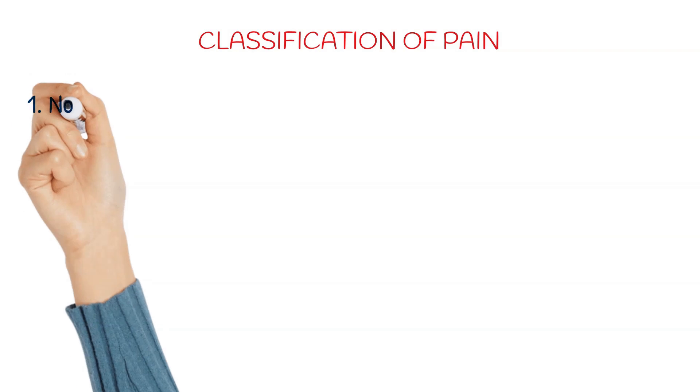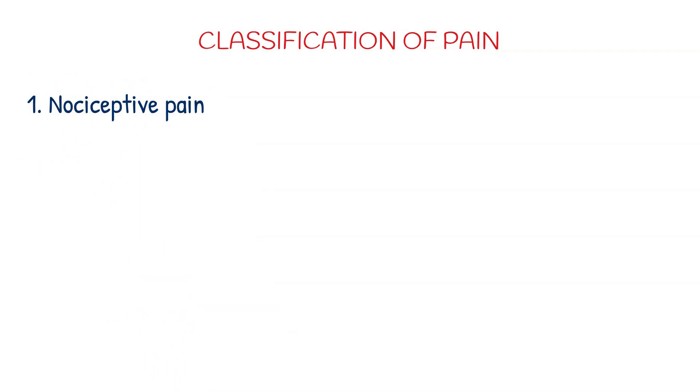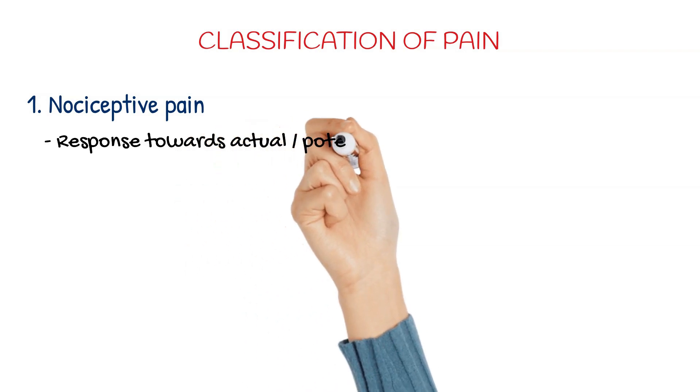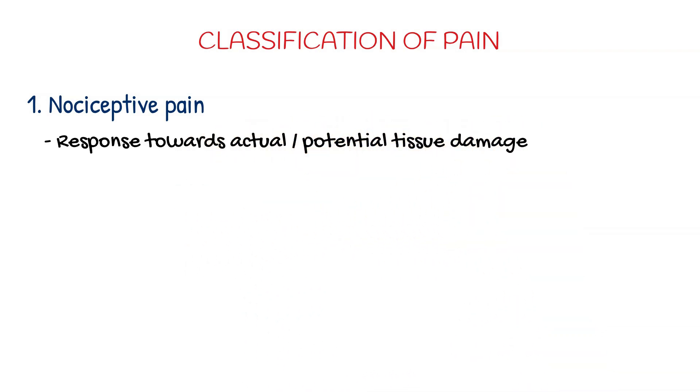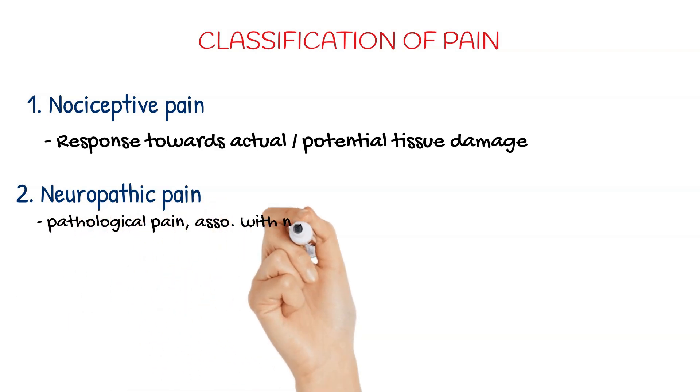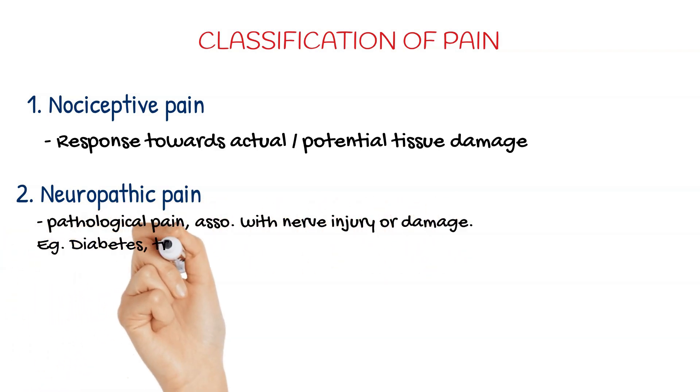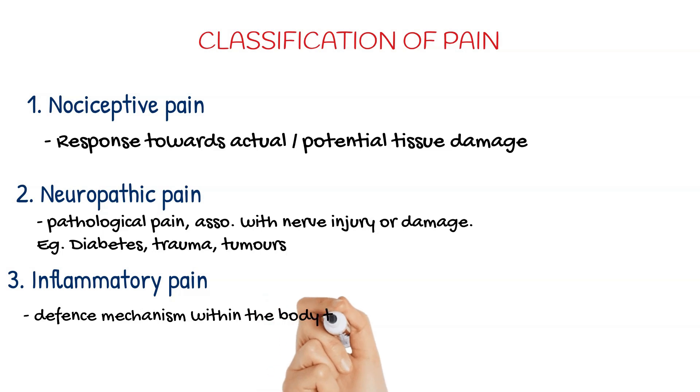Nociceptive pain. Nociception is derived from the word nocere which means to hurt. It is perception of a noxious stimulus, a response towards actual or potential tissue damage. Neuropathic pain is a pathological pain associated with nerve injury or damage, usually seen in diabetes mellitus, trauma or tumors. Inflammatory pain is a defense mechanism within the body to eradicate necrotic cells and to initiate cell repair.